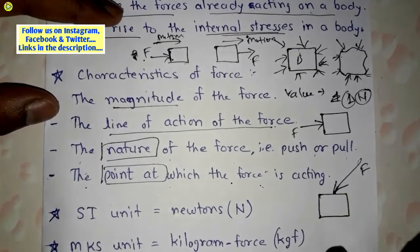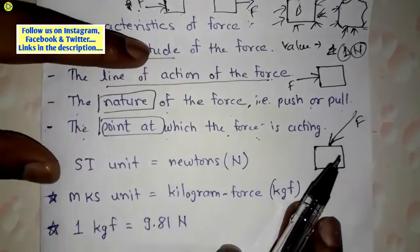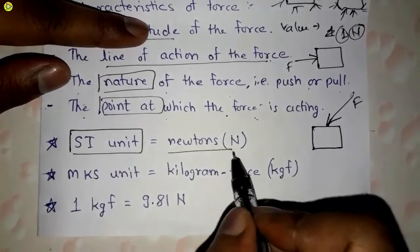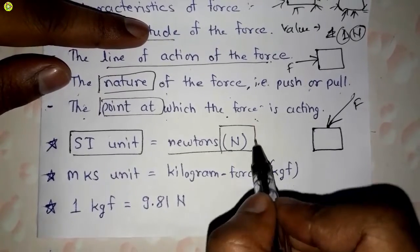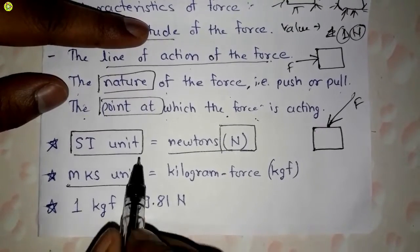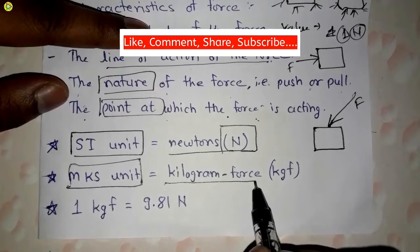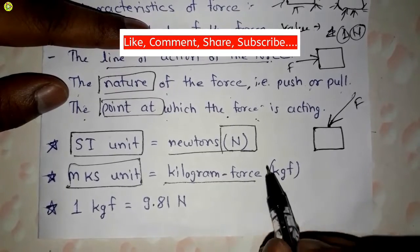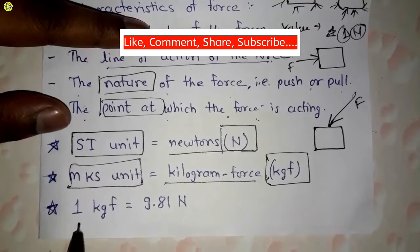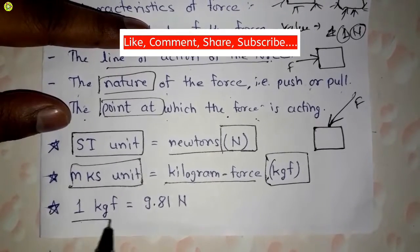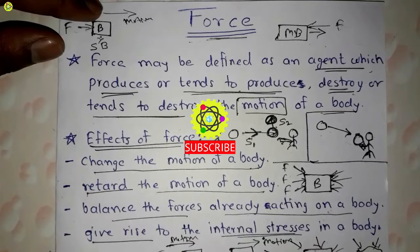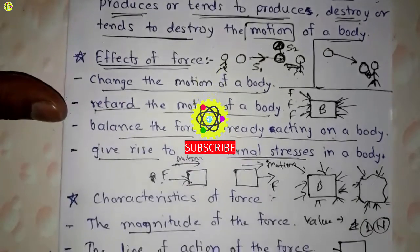The characteristics of force are: magnitude, line of action, nature (push or pull), and the point at which the force is acting. Regarding units of force: the SI unit of force is newton, with symbol N. The MKS unit of force is kilogram-force, also called kgf. One kgf is equal to 9.81 newtons.